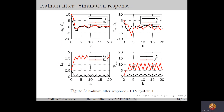From the plots of the gain matrix and Riccati matrix elements, we observe that here LK and PK do not converge to fixed matrices because of the time varying nature of AK and BK. The state response shows that the Kalman filter can estimate the states of the linear time varying system as well, with sufficient accuracy.